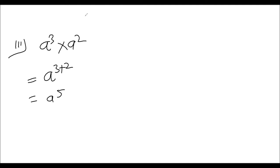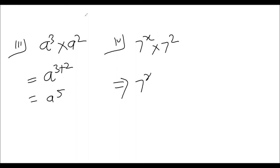Question number 4: 7 to power x into 7 to power 2. In this condition the base is the same and the power is different, so what will we do — we add the powers. So the answer will be 7 to power x plus 2.